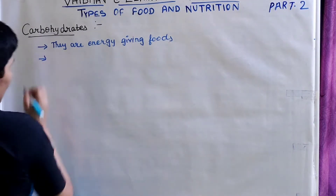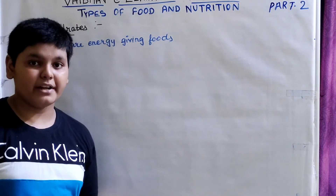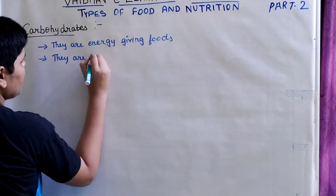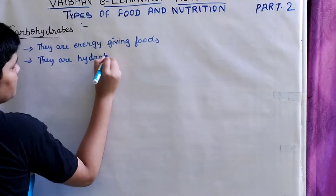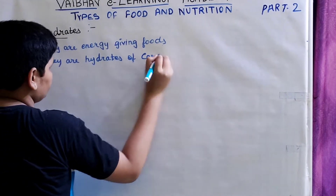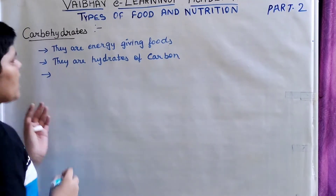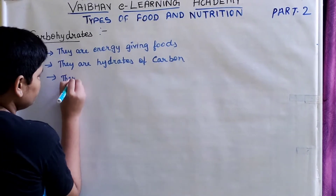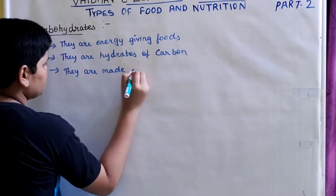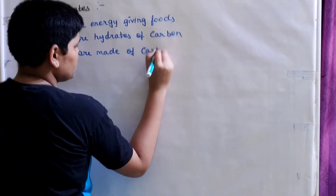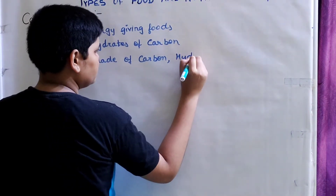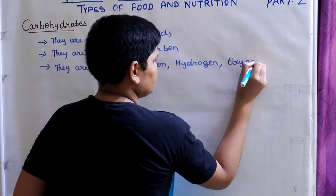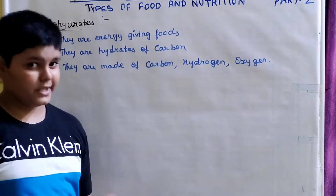As the name suggests, we have carbohydrates. It means that carbohydrates are hydrates of carbon. They are made up of three different types of materials: carbon, hydrogen, and oxygen.